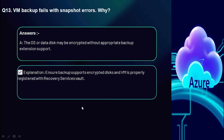Question 13: VM backup fails with snapshot errors — why? The OS or data disk may be encrypted without appropriate backup extension support. Ensure backup supports encrypted disks and the VM is properly registered with the Recovery Services Vault.